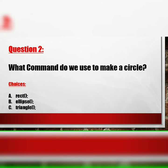Question 2: What command do we use to make a circle? Your choices are A: rect followed by parentheses and a semicolon. B: ellipse followed by parentheses and a semicolon. C: triangle followed by parentheses and a semicolon.